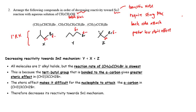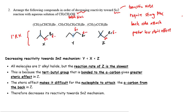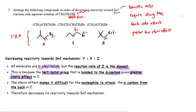All the molecules are primary haloalkanes, but the reaction rate of Z is the slowest. This is because the tert-butyl group bonded to the alpha carbon gives the greatest steric effect in structure Z.